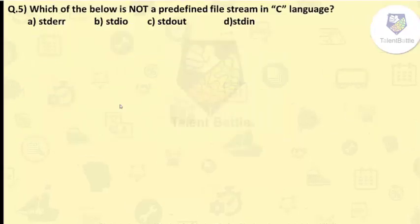Next question: which of the below is not a predefined file stream in C language? Below are the options: stderr, stdio, stdout, and stdin. If we observe the options below, we see stdio.